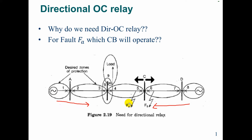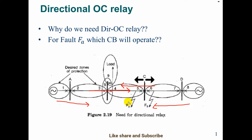Now for example, normal current is going in this direction — there is no fault. Normal current is going in this direction. And when the fault comes, the fault current direction changes. So we need a directional overcurrent relay. If the fault current direction is inverse or opposite to the load current, then we need to operate based on current direction.